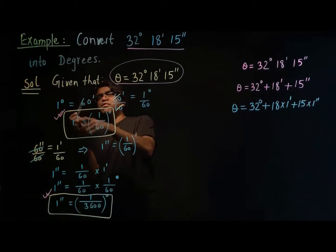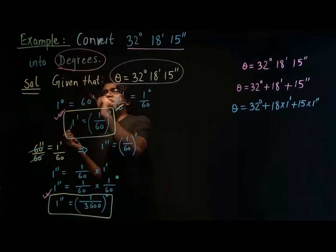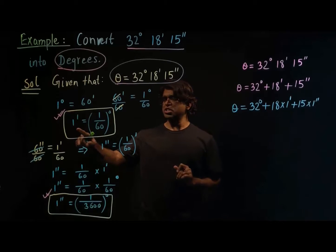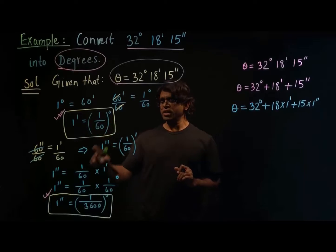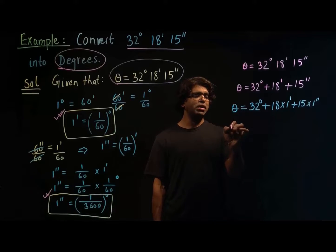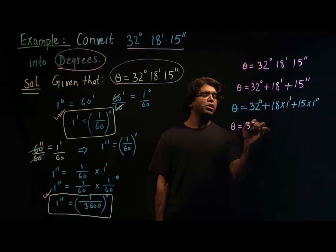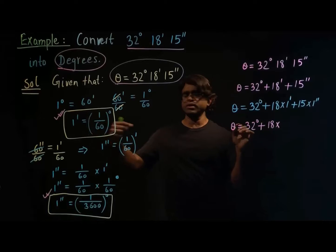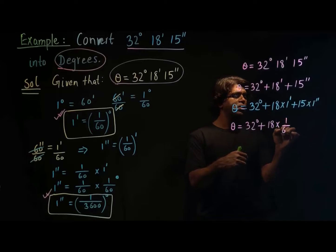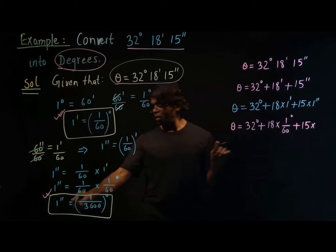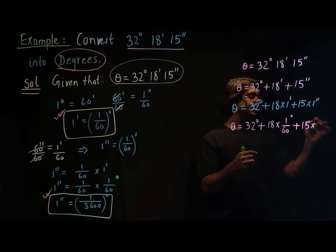The question says we need to convert everything in terms of degrees. We know one minute is one over 60 degrees and one second is one over 3600 degrees. So substituting, theta equals 32 degrees plus 18 times one over 60 degrees, plus 15 times one over 3600 degrees.